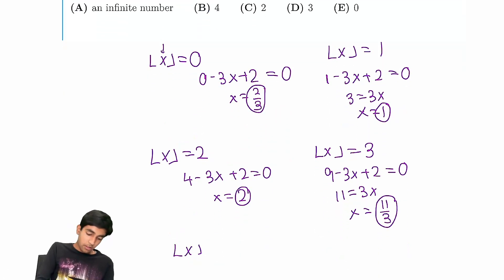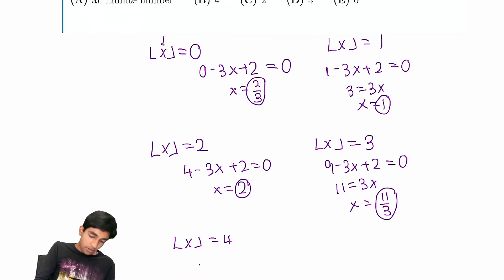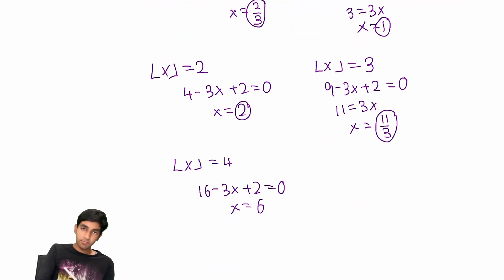And what about floor of x is 4? Now we have 4 squared, 16 minus 3x plus 2 equals 0, so we get x equals 6. But this doesn't work because x equals 6 doesn't satisfy this equation.